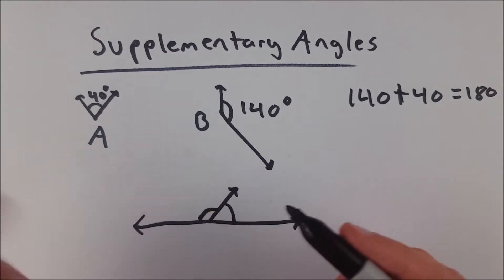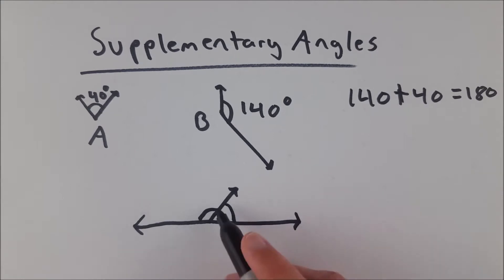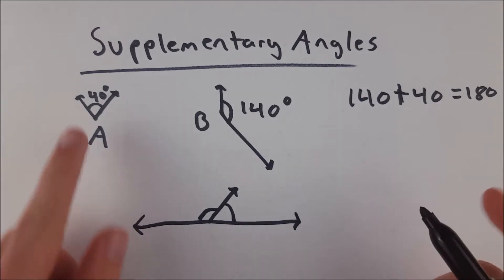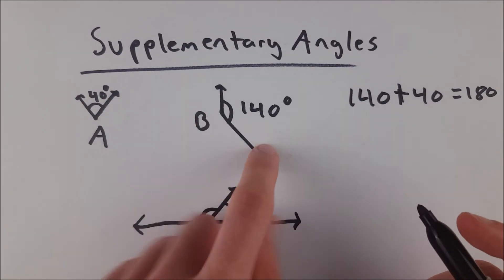Therefore, this plus this has got to be 180. So this angle and this angle are supplementary. They are supplementary angles. This one is supplementary to this one, and this one is supplementary to this one. But again, in order for angles to be supplementary, they don't necessarily have to be adjacent.